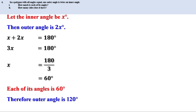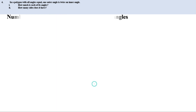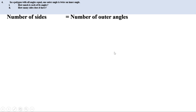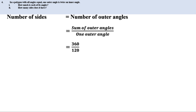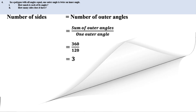In any polygon, the number of sides, inner angles, and outer angles are equal. So to find the number of sides, it is enough to find the number of outer angles. Number of outer angles = sum of outer angles ÷ one outer angle = 360 ÷ 120 = 3. Therefore the polygon has 3 outer angles and hence 3 sides — it is a triangle.